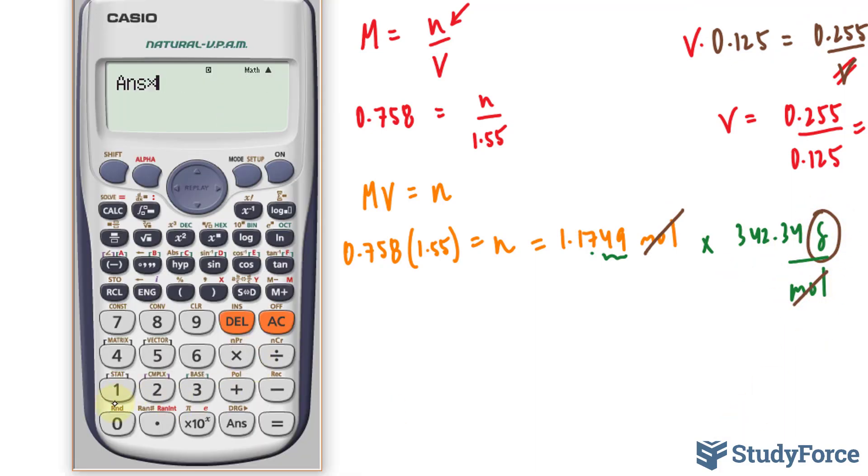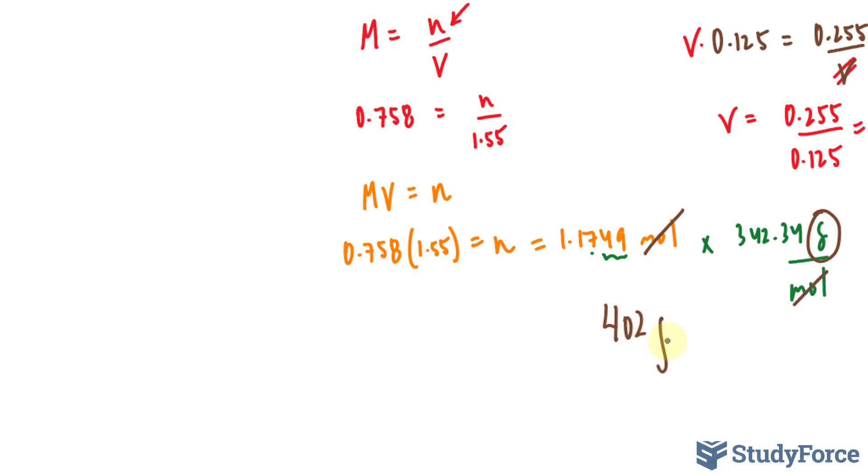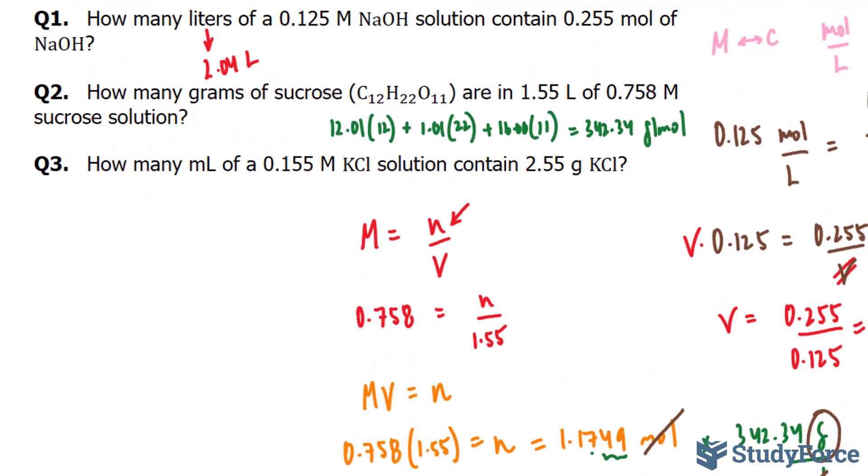So taking my number and multiplying it by 1.1749, this gives us 402 grams. Everything after this first two is insignificant. 402 grams of sucrose are found in this solution.